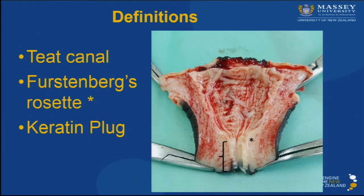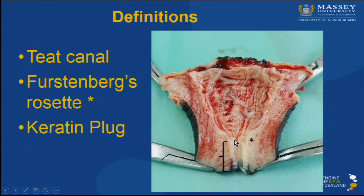To give you some definitions: the teat canal is this area here, the last centimeter or so at the tip of the teats. It's covered by a keratinized epithelium, limited dorsally by the Furstenberg rosette here — that fold of mucosa — and it's sealed by a keratin plug that is only fully formed at the end of lactation.